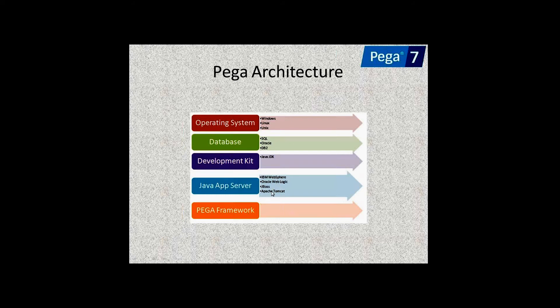One application server is also required. Pega supports all servers available in the market — IBM WebSphere, Tomcat, WebLogic, JBoss, and others. Based on the client requirement they choose the database and server and take the license from Pega Systems. In most cases, 99% of the time the OS will be Windows, and any database is supported.